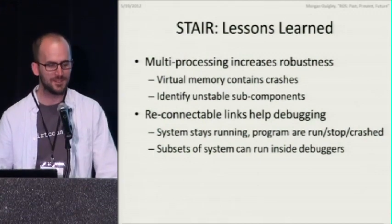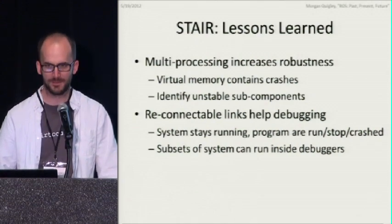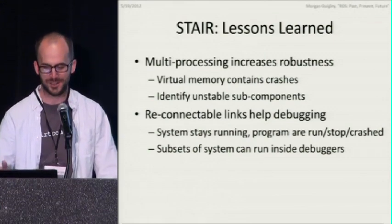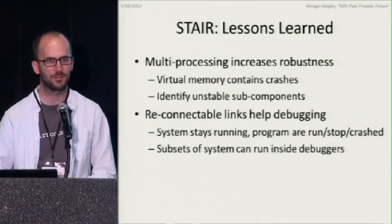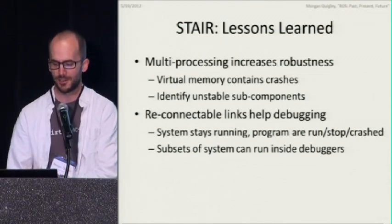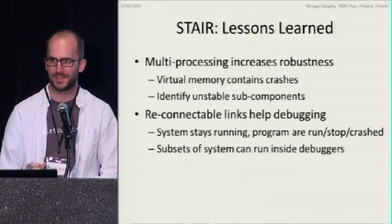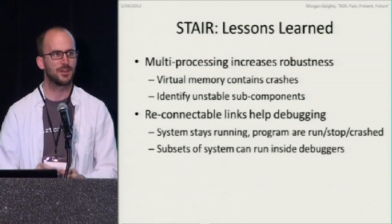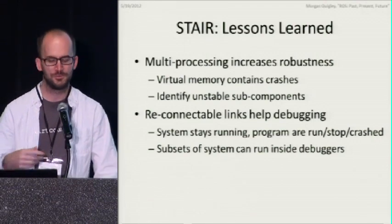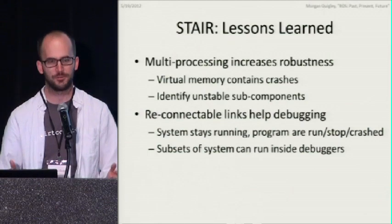What did we learn from stapler? Multiprocessing is a great thing — someone had this idea back in the 1960s and it turns out they were right. Virtual memory is wonderful because it contains crashes: when a program seg-faults in a multiprocessing system, it just takes that one program down, you core dump that process, and the rest of the system stays up. It also helps identify which component caused the crash. In our very early multi-threaded framework, one subsystem would run off the end of an image and trash somebody else's memory, then a completely different subsystem would crash five minutes later — and it was hard to tell who was at fault originally. With multiprocessing and virtual memory isolation, you actually know who went down.